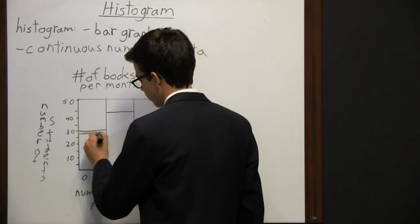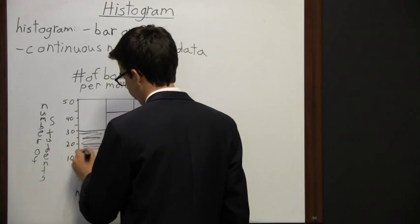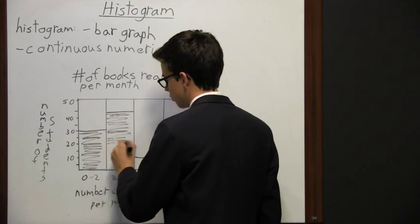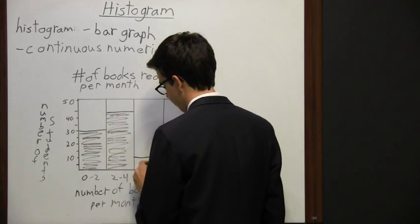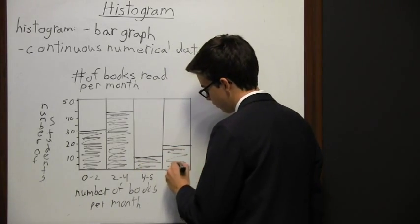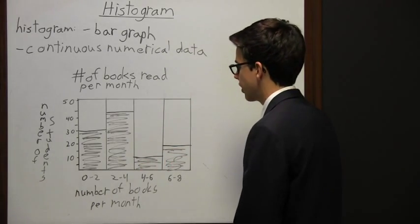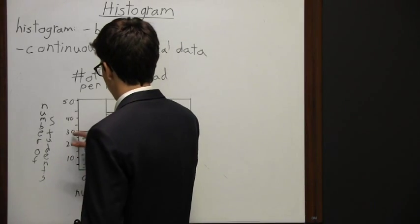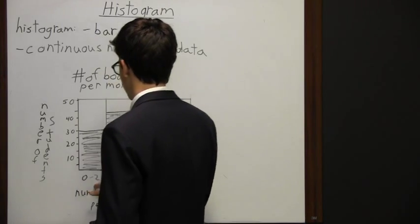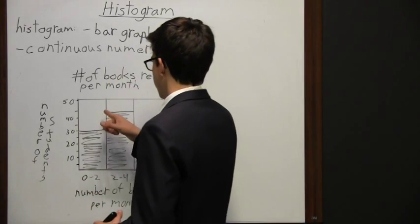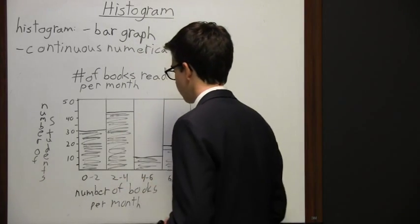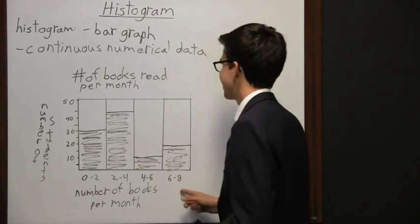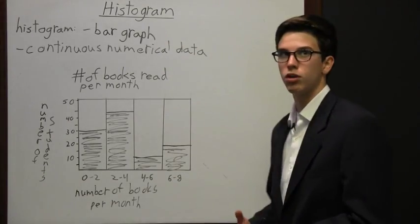I'm going to go ahead and fill in these bars right here. One difference you may have already noticed between a histogram and a regular bar graph is that these are all squished together — there are no spaces in between them. We see here four different bars, each representing different amounts of books. 30 students read 0 to 2 books a month, 45 students read 2 to 4 books a month, 10 students read 4 to 6 books a month, and 15 students read 6 to 8 books per month.